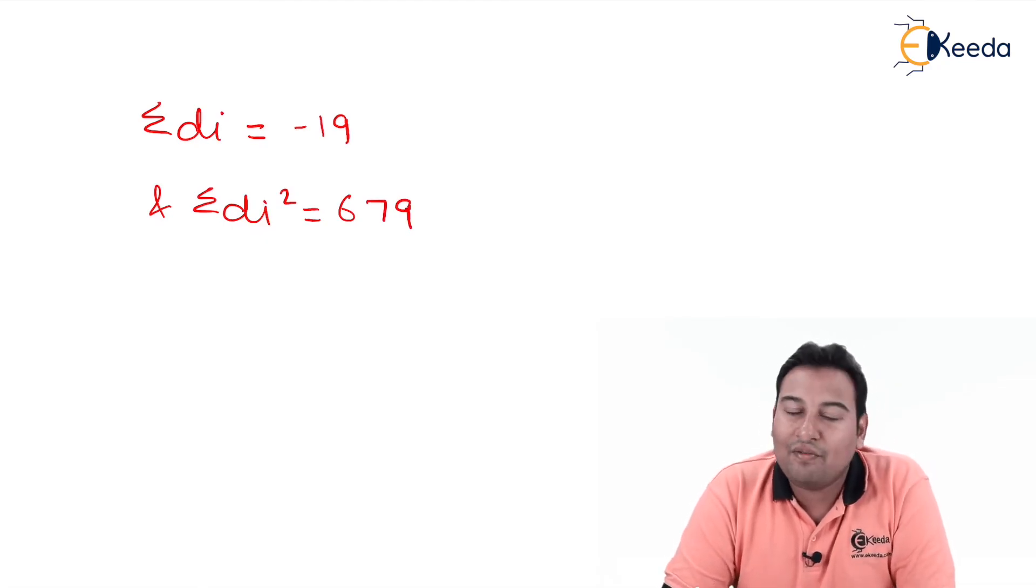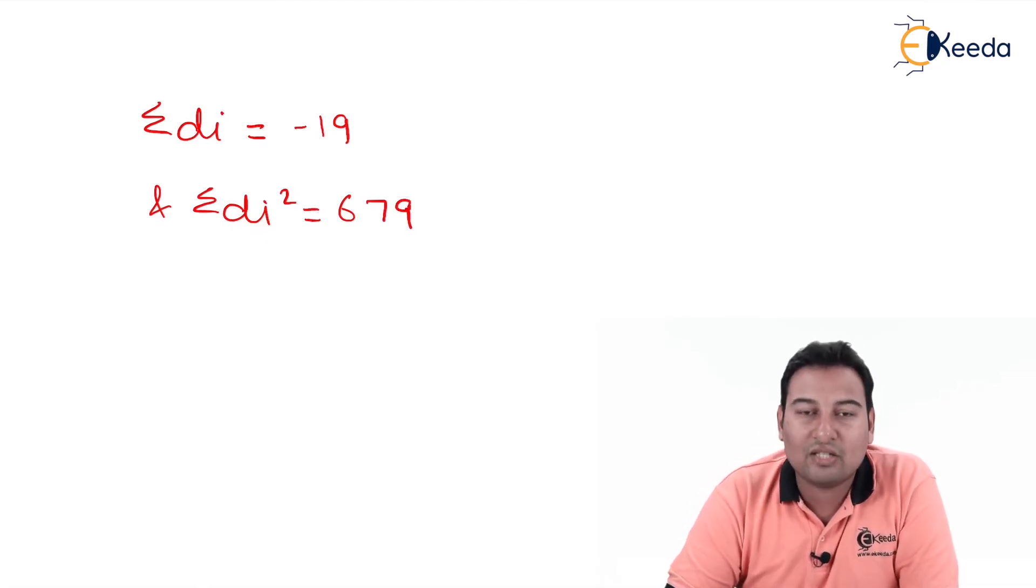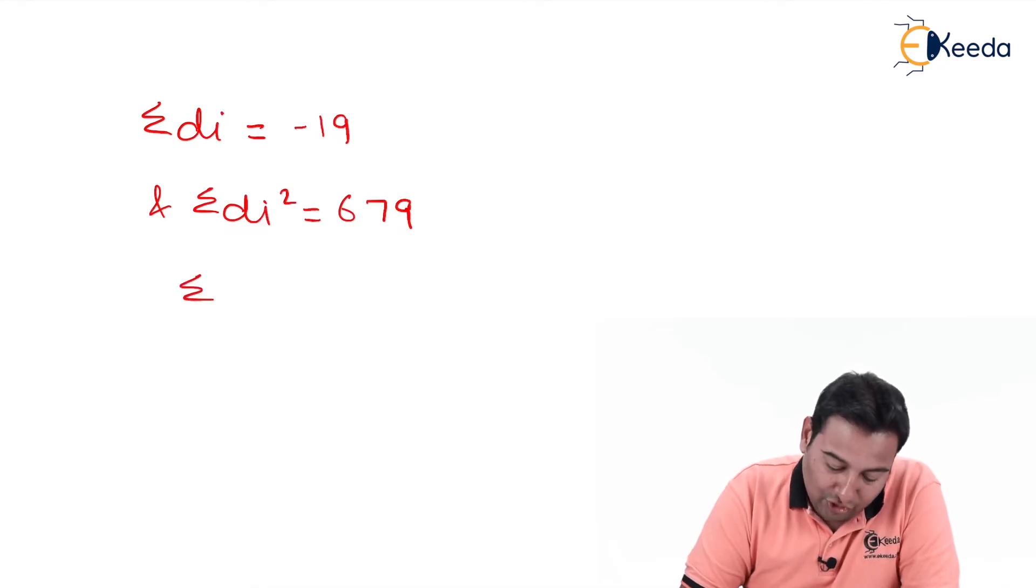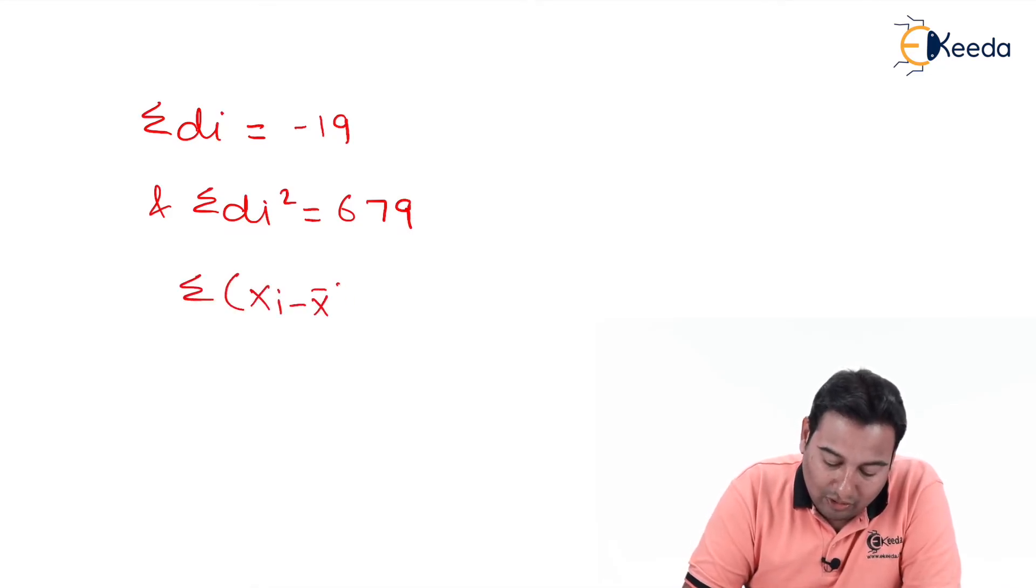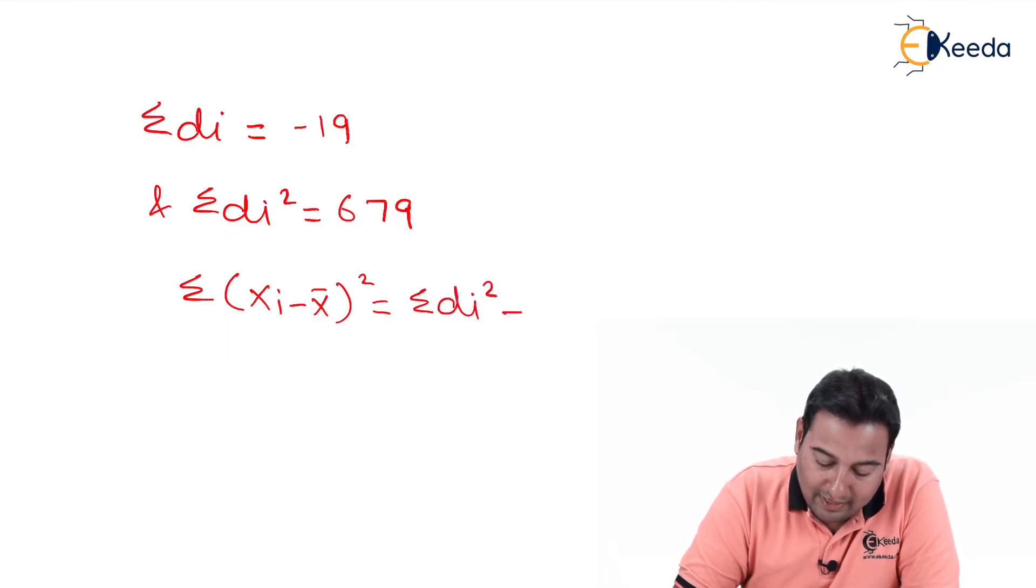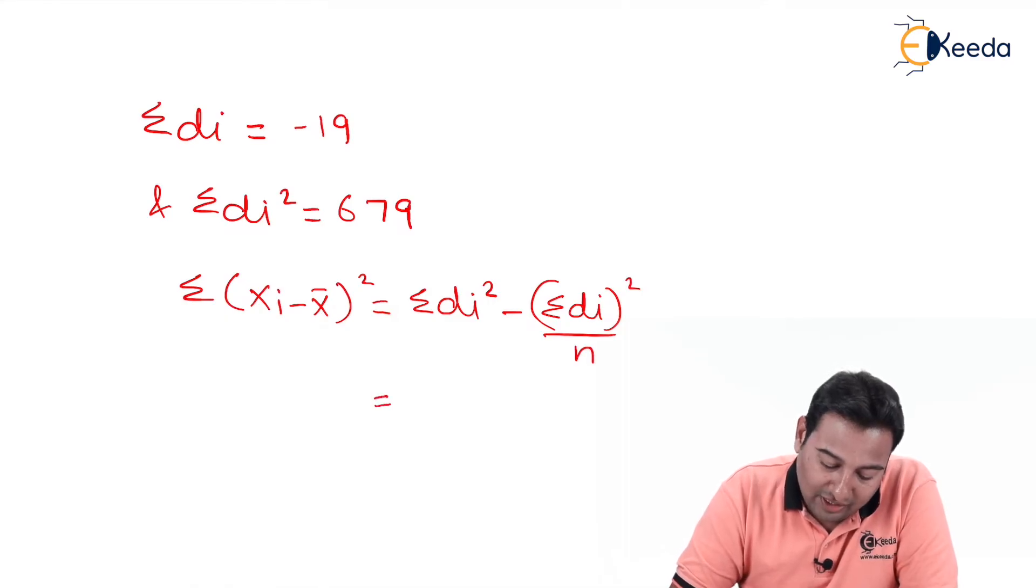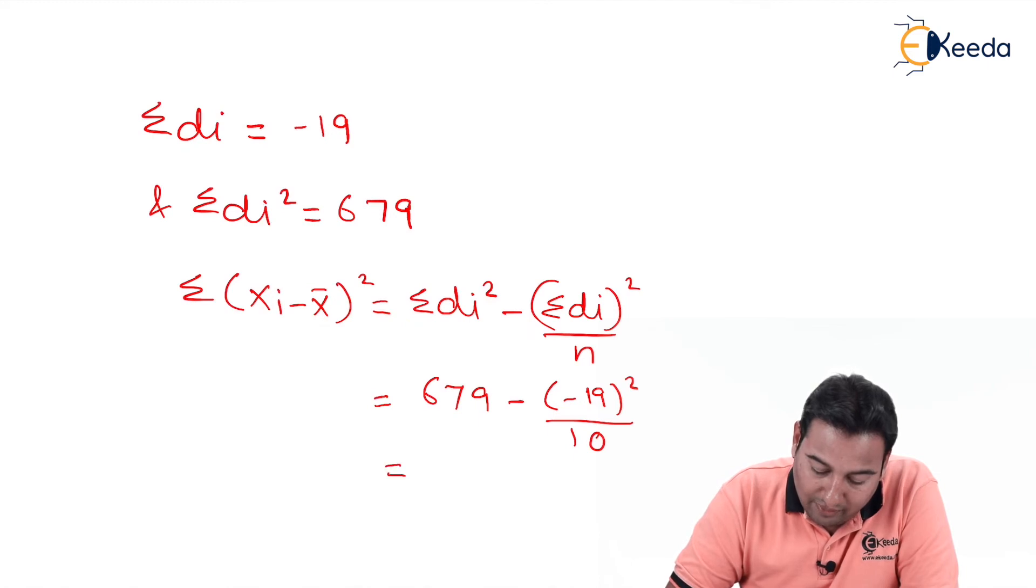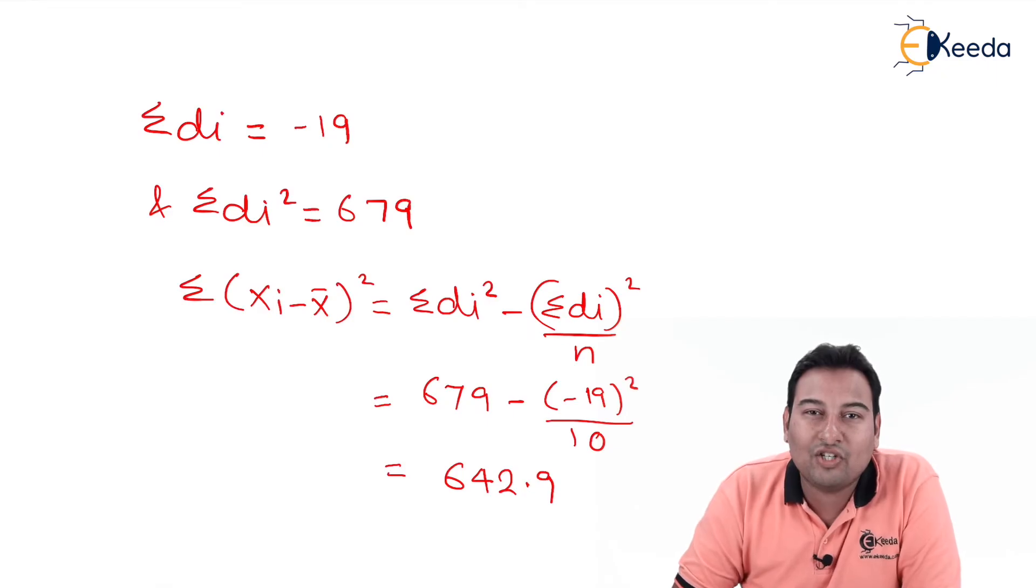We are ready with summation di and summation di square. Let us find summation of (xi minus x̄)². That is summation di² minus (summation di)² upon n. Summation di² is 679 minus minus 19 the whole square upon n. n is 10. After solving you will get 642.9. This is the value of summation of (xi minus x̄)².